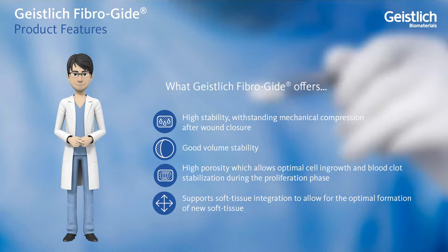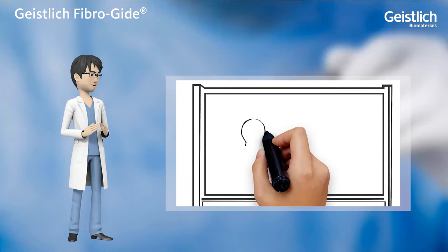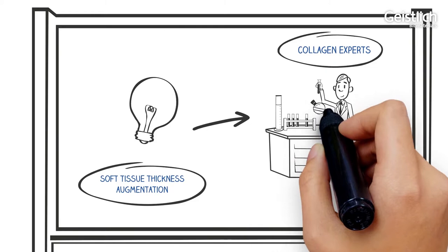Geislik FiberGuide is a ready-to-use, off-the-shelf product, providing practitioners the alternative connective tissue graft. What inspired this innovation? With a long history of collagen expertise, Geislik embarked on an ambitious project looking to mimic and optimize the biological functionality, degradation rates, and resistance to mechanical strain found in autogenous tissue.